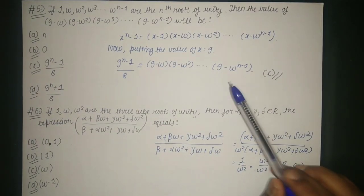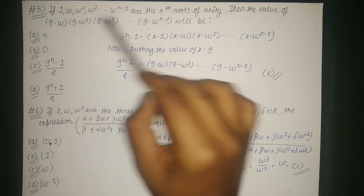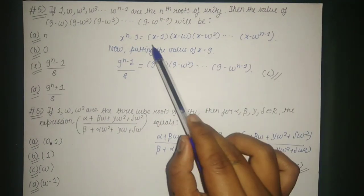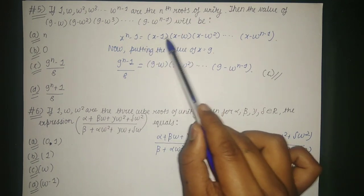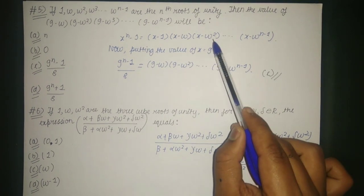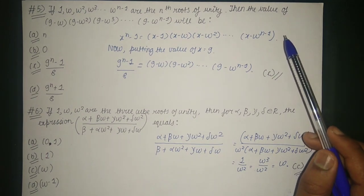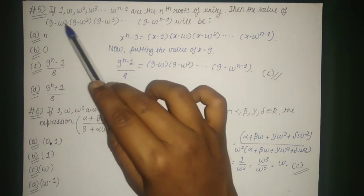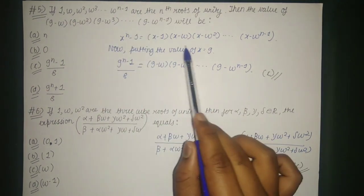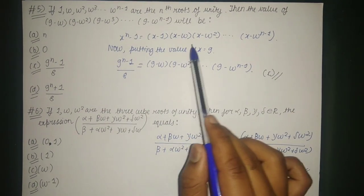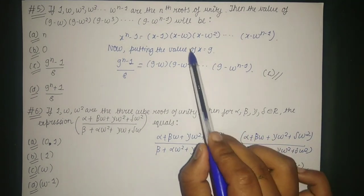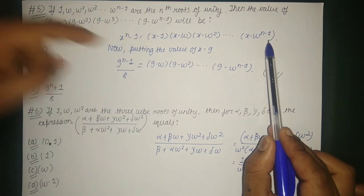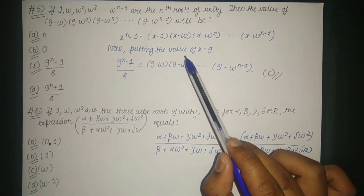Since these are the nth roots of unity, x^n - 1 can be written as (x - 1)(x - ω)(x - ω²)...(x - ω^(n-1)). We want the terms (9 - ω)(9 - ω²)...(9 - ω^(n-1)), so we substitute x = 9 into this factorization.